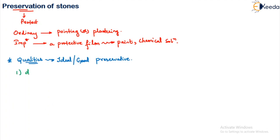The first one is it should not allow or does not allow moisture to penetrate into the stone. Means what? The moisture particles are not allowed into the pores of the stone. That is what is the meaning.